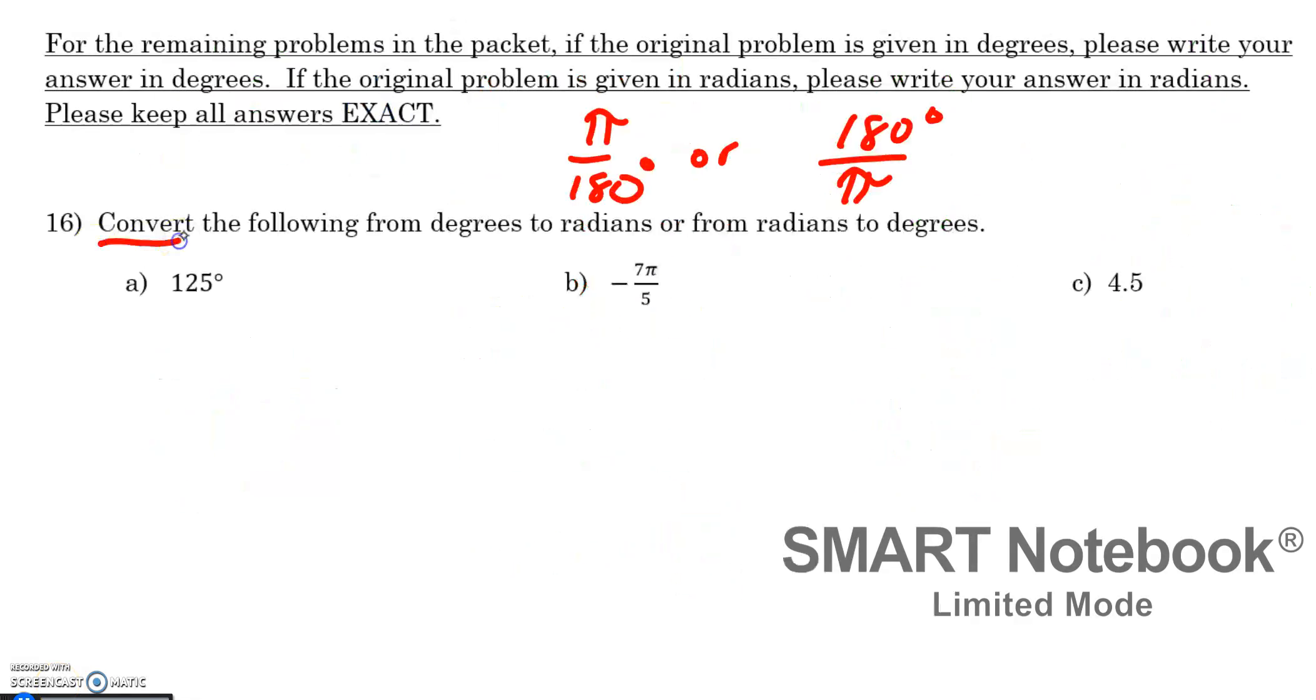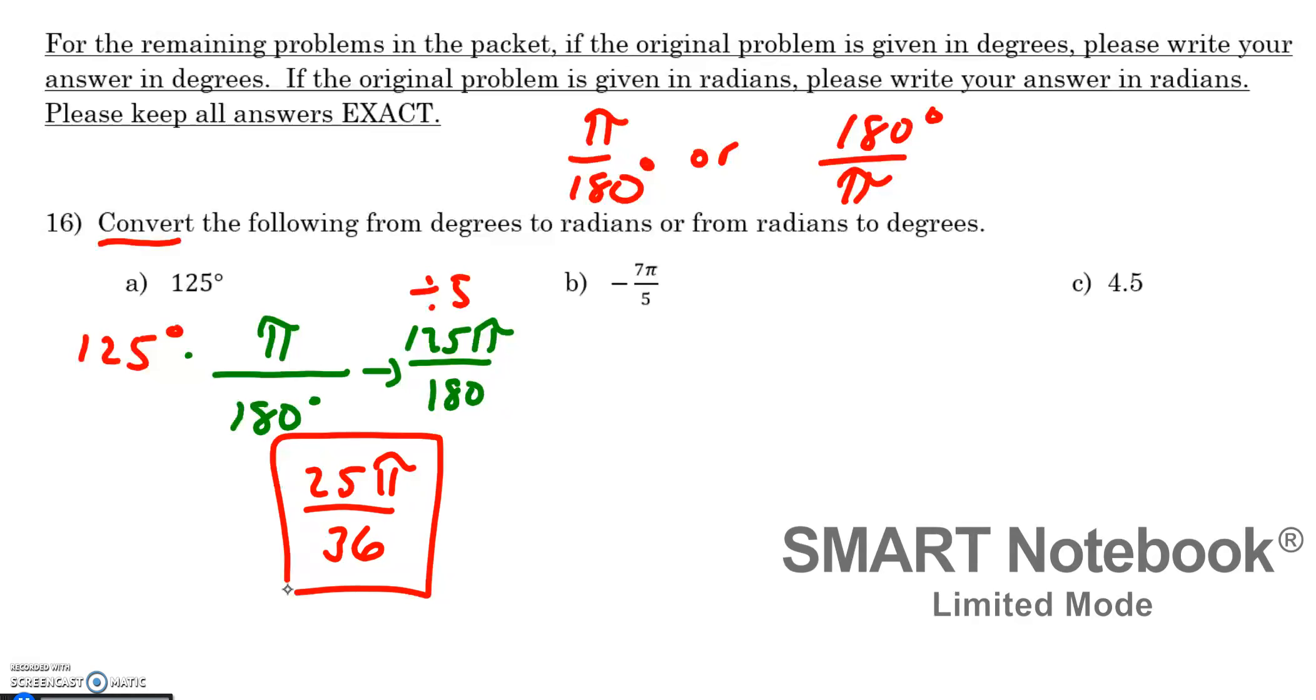Number 16, we're trying to convert from degrees to radians or radians to degrees. So for part A, I noticed that I have 125 degrees, which means if I'm trying to convert it, just like dimensional analysis or factor labeling from chemistry, we need the degrees to cross out, which means I need 180 degrees on the bottom so that these degrees cross out, I'm only left with radians. So I'm going to have pi on the top. If I wanted to multiply straight across, I'd have 125 pi over 180. I then might notice that I could take a 5 out of both of these numbers. And if I did so, I would be left with 25 pi over 36. That is your final answer left in exact form.